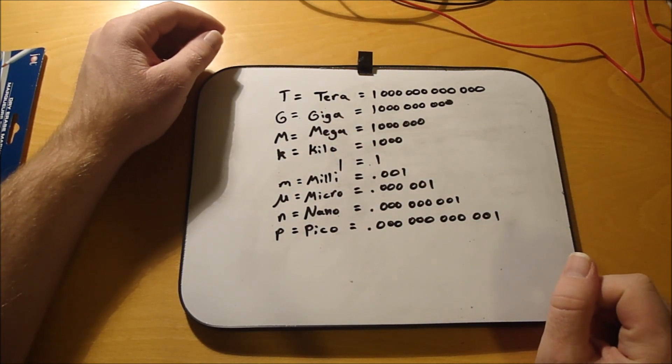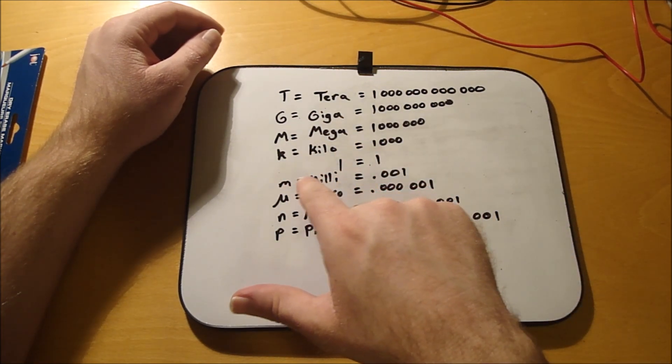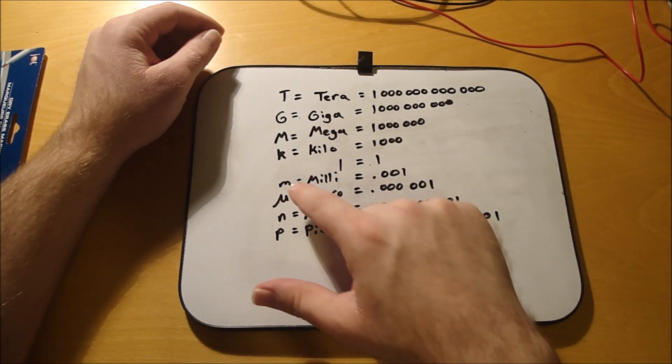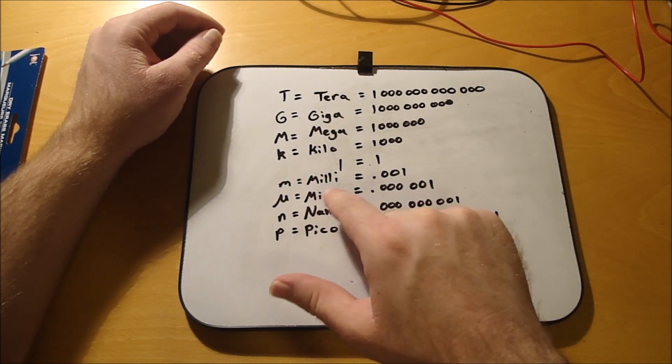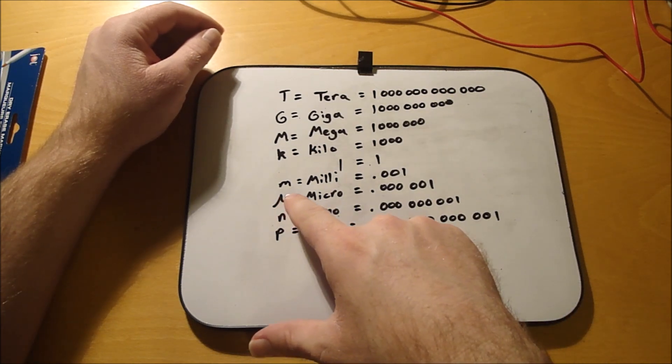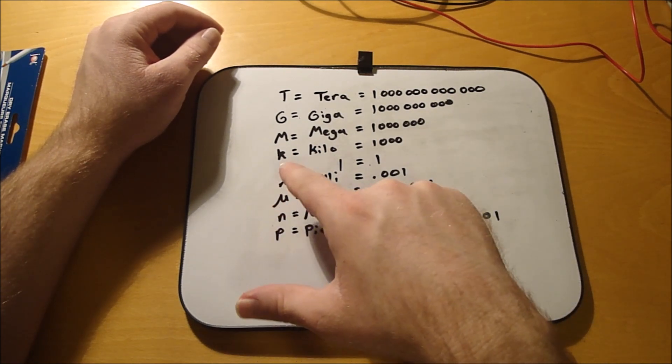And then one milli is a lowercase m, one micro is a, it looks like a lowercase u but it actually has a long tail on the front.